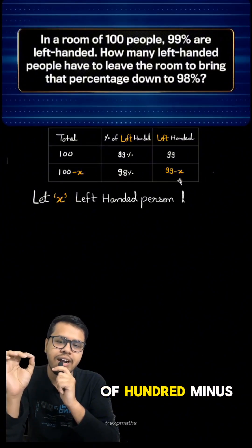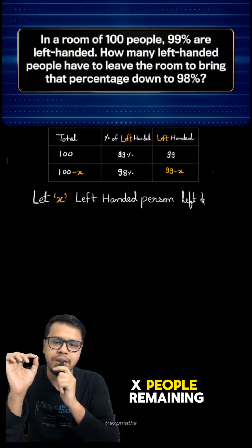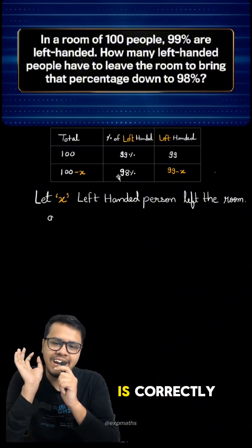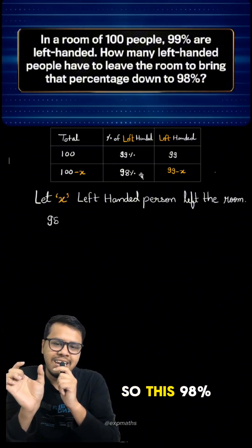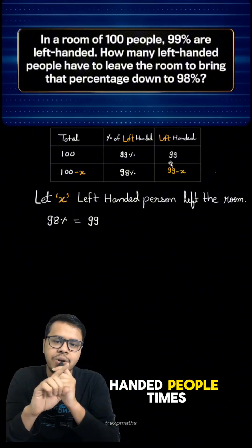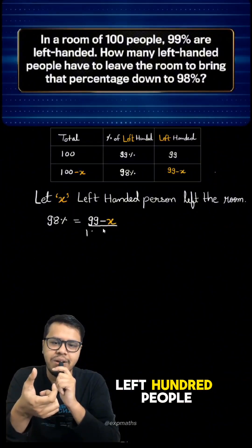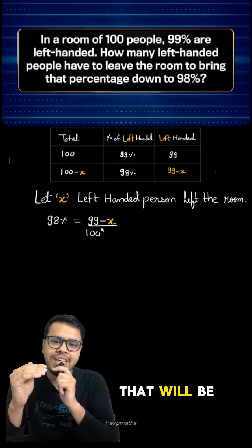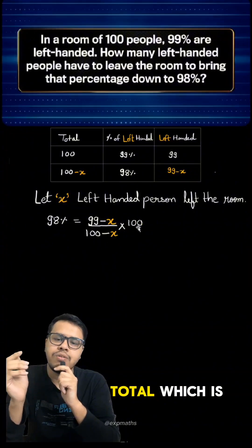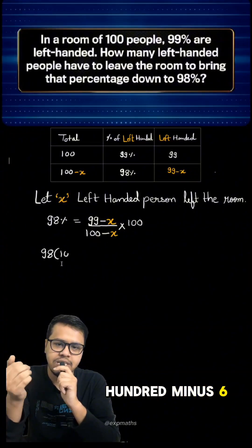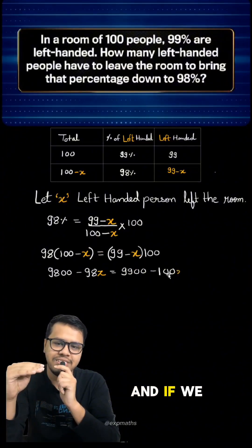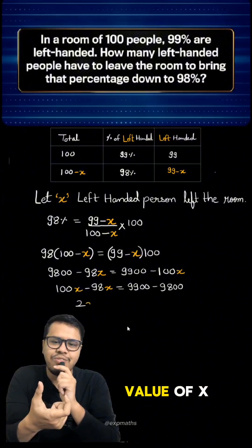Now we have 99 minus x left-handed people remaining, and a total of 100 minus x people remaining. If we apply the formula of percentage correctly, this 98 percent should represent the fraction of left-handed people multiplied by 100. That fraction is (99 - x) / (100 - x). So we have a simple equation in x.